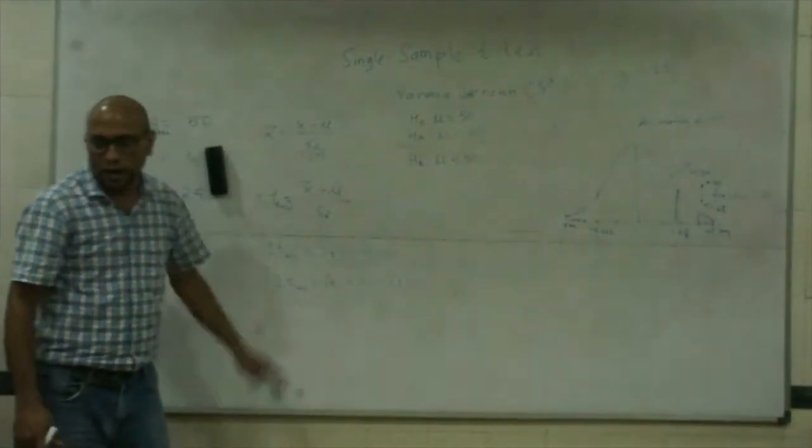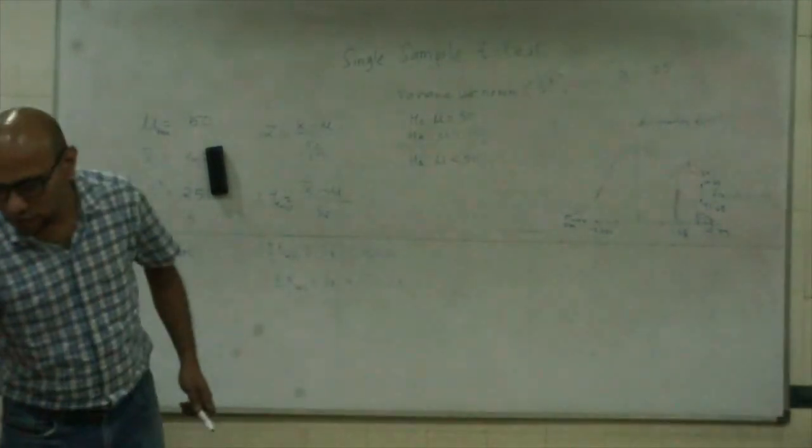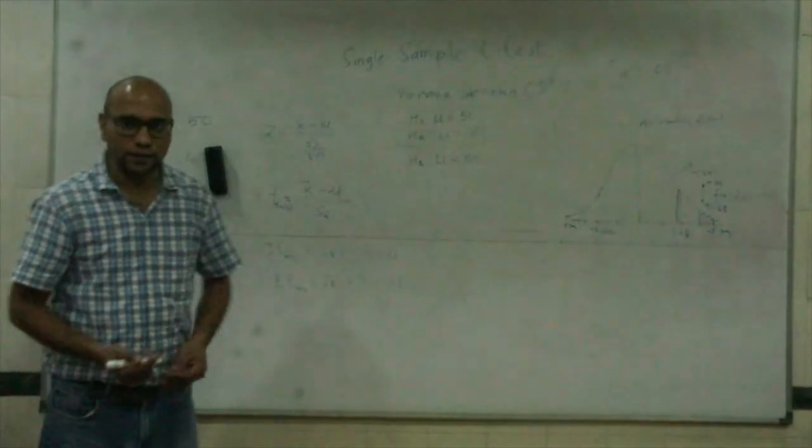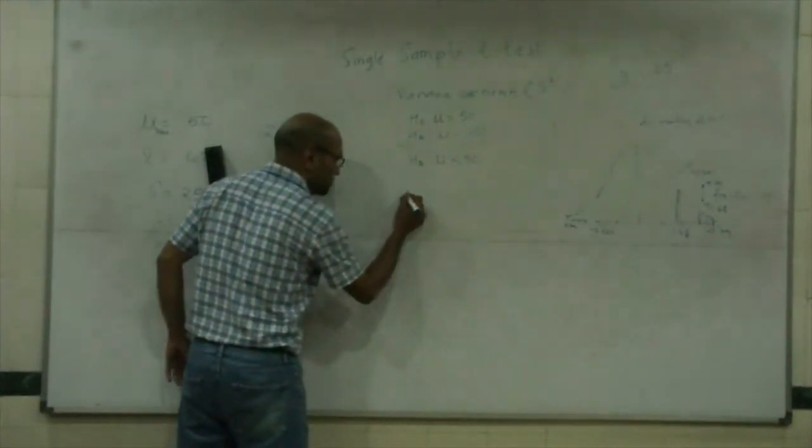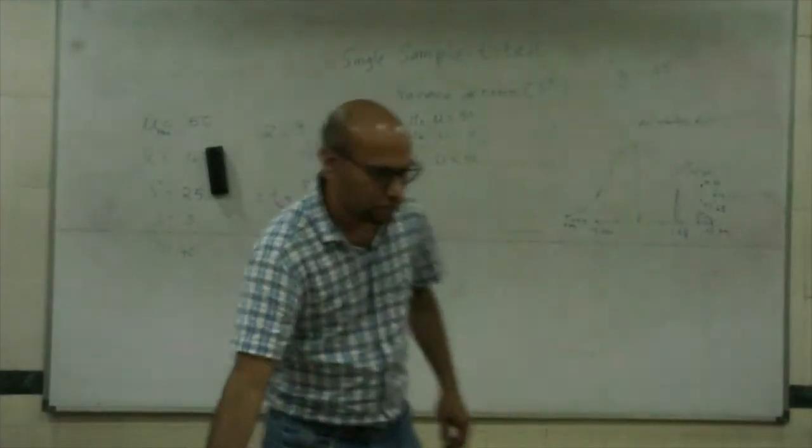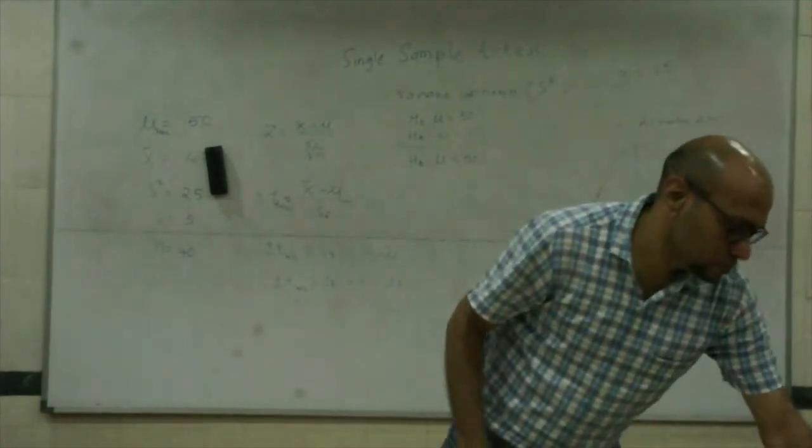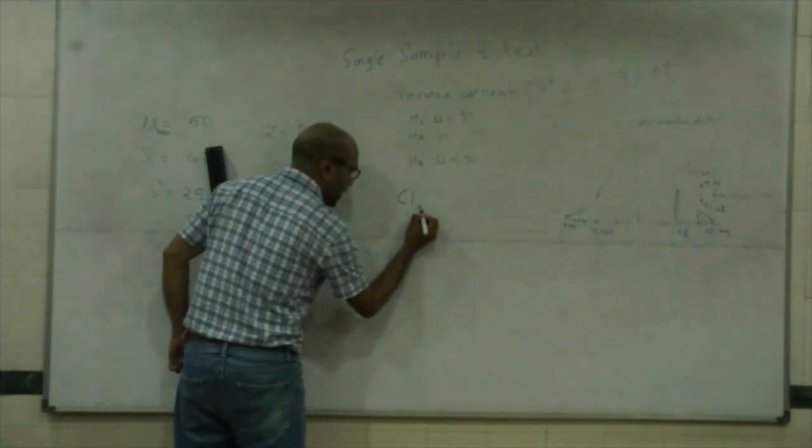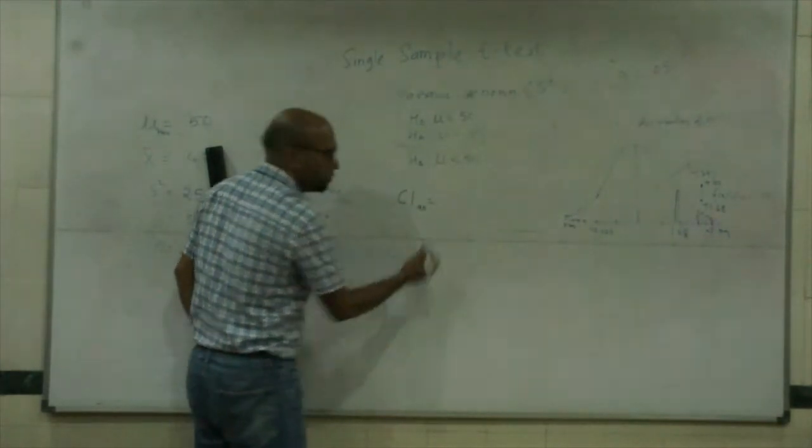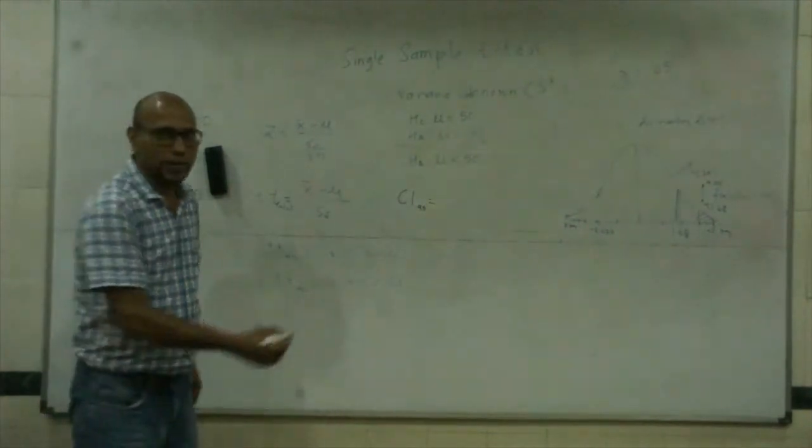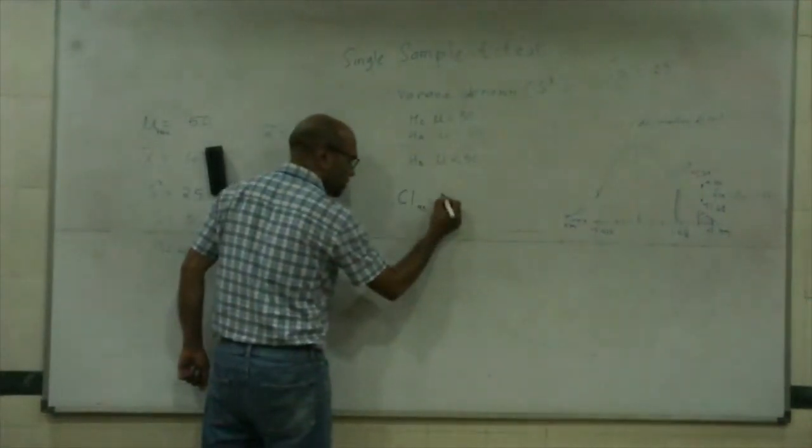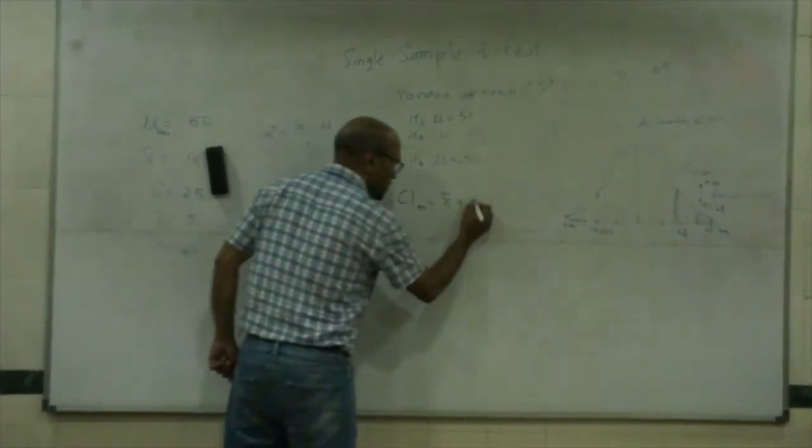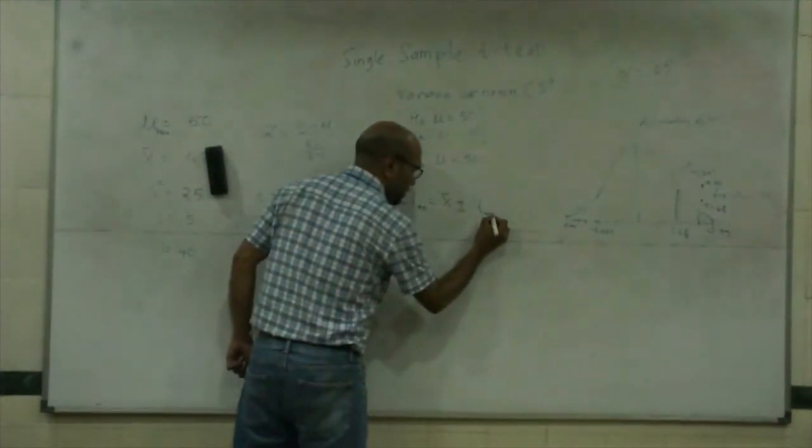Most popularly, you write this as confidence interval at, say, 0.95 confidence interval. For T, it's X bar plus minus T alpha by 2 times S X bar.